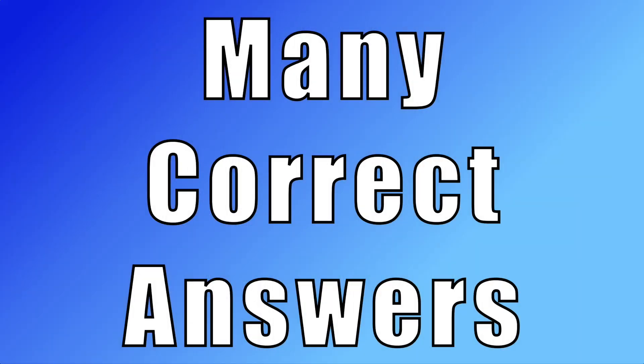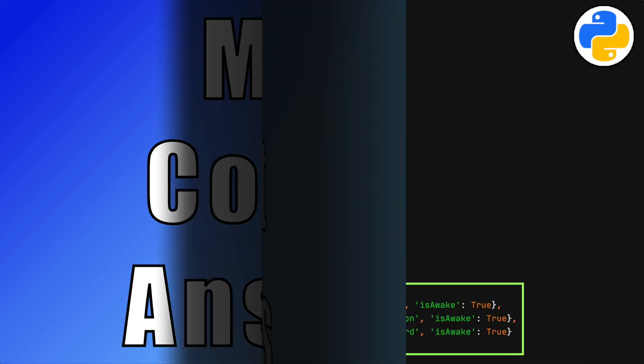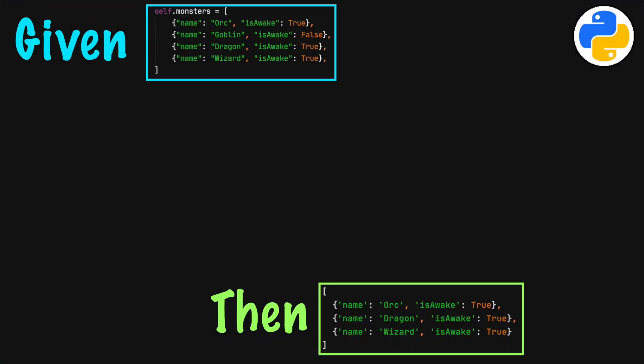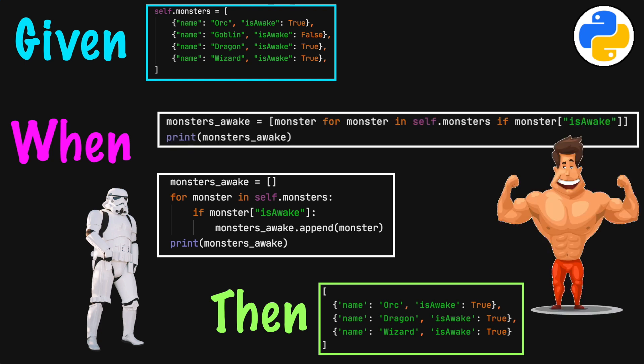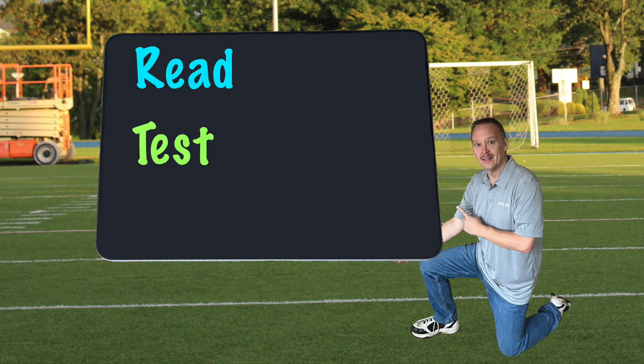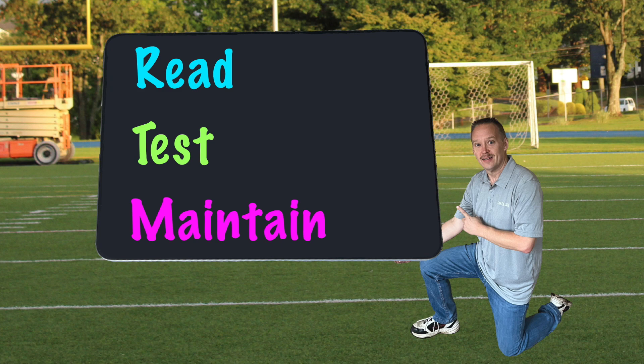There is no one correct answer. Junior and senior level developers will write a working program. The difference is, senior level developers will follow the preferred standards. The cleaner code is easier to read, test, and maintain, which will save time and reduce future issues.